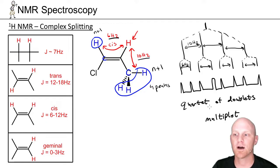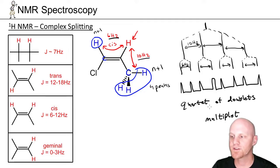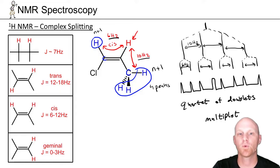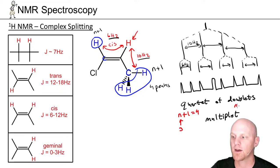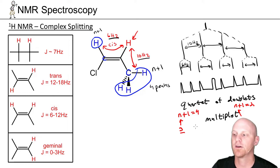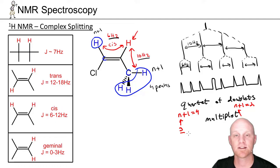You should recognize a quartet of doublets as eight peaks. If you were told in a spectrum it's a quartet of doublets and had to go backwards: for the quartet part, N+1 equals 4, which implies three neighbors; for the doublets part, N+1 equals 2, which implies one neighbor. So you'd have a hydrogen that has three neighbors on one side and one neighbor on the other side — you can go backwards from the name to figure out the neighbor count.